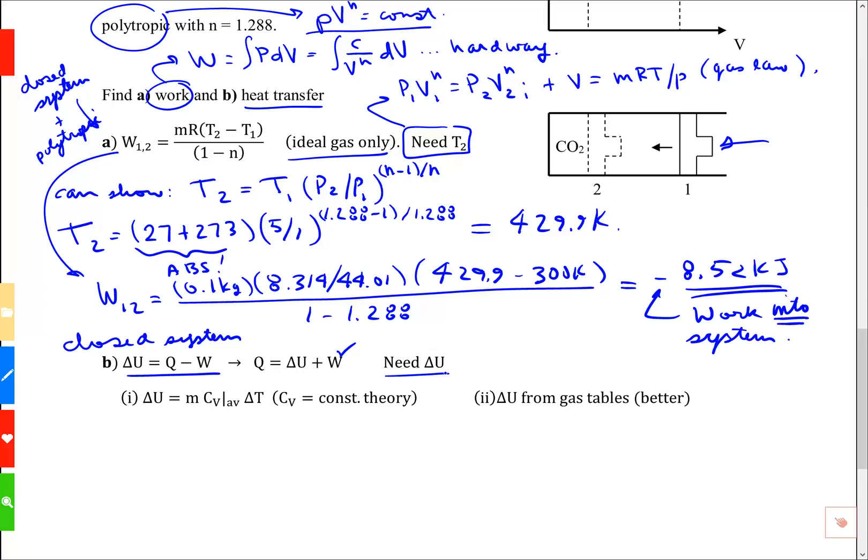There's two ways to get the internal energy for this problem. One is we could use constant specific heat theory. This is essentially working the integral, assuming Cv is constant. Delta U is M times Cv for the process. I'm going to take an average times the temperature change. Let's work on that one first.